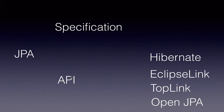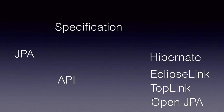The API is for developers to master. Once JPA came in, we as developers need not learn Hibernate, Eclipse Link, Toplink, or OpenJPA's APIs separately. We can simply learn the JPA API and all these vendors support this API. That's the power of JPA.